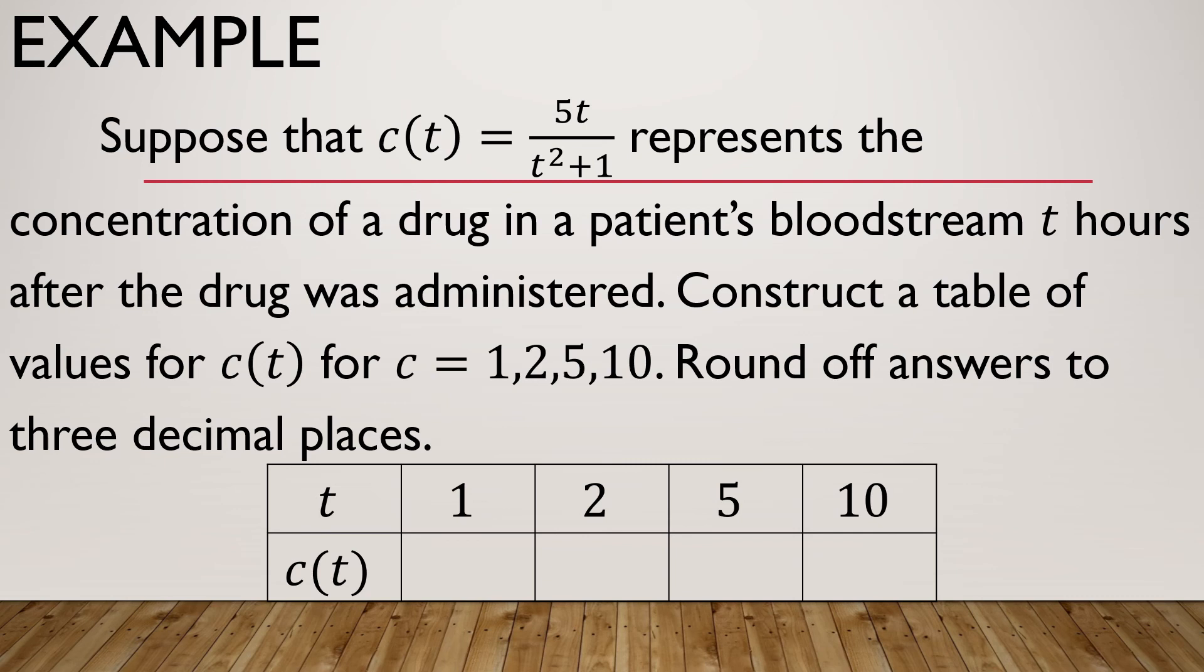Now, for this, I'm just going to read this, but I'm not going to discuss the answers. It is for you to explore or to answer this one on your own. Suppose that c(t) = 5t/(t^2 + 1). We are going to represent the concentration of a drug in a patient's bloodstream t hours after the drug was administered. So we have to construct a table of values for c(t) for t equals 1, 2, 5, and 10. We have to round off the answer to 3 decimal places.